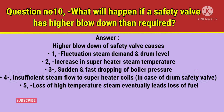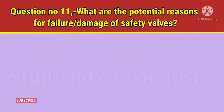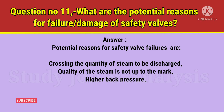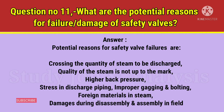Question number 11: What are the potential reasons for failure or damage of safety valves? Answer: Potential reasons for safety valve failures are: crossing the quantity of steam to be discharged, quality of steam not up to the mark, higher back pressure, stress in discharge piping, improper gagging and bolting, foreign materials in steam, and damages during disassembly and assembly in the field.